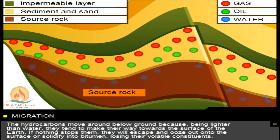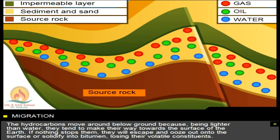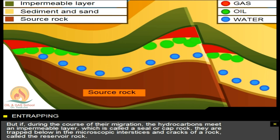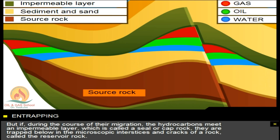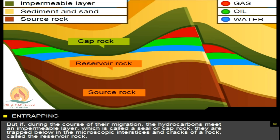The hydrocarbons move around below ground because, being lighter than water, they tend to make their way towards the surface of the Earth. If nothing stops them, they will escape and ooze out onto the surface or solidify into bitumen, losing their volatile constituents. But if, during the course of their migration, the hydrocarbons meet an impermeable layer, which is called a seal or cap rock, they are trapped below in the microscopic interstices and cracks of a rock called the reservoir rock.